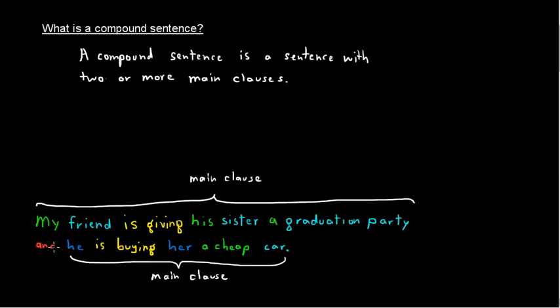My friend is giving his sister a graduation party and he is buying her a cheap car. Still a compound sentence. Each of these clauses could stand alone, but now we have two or more.